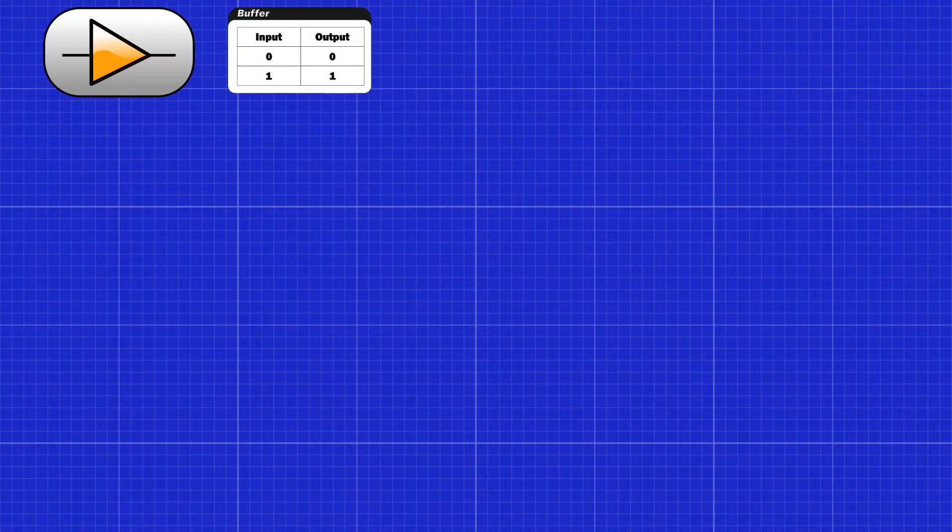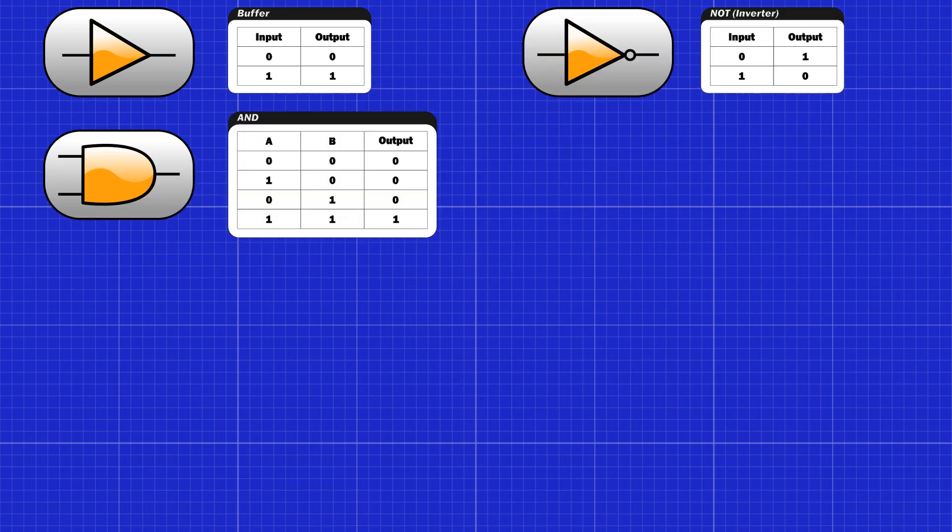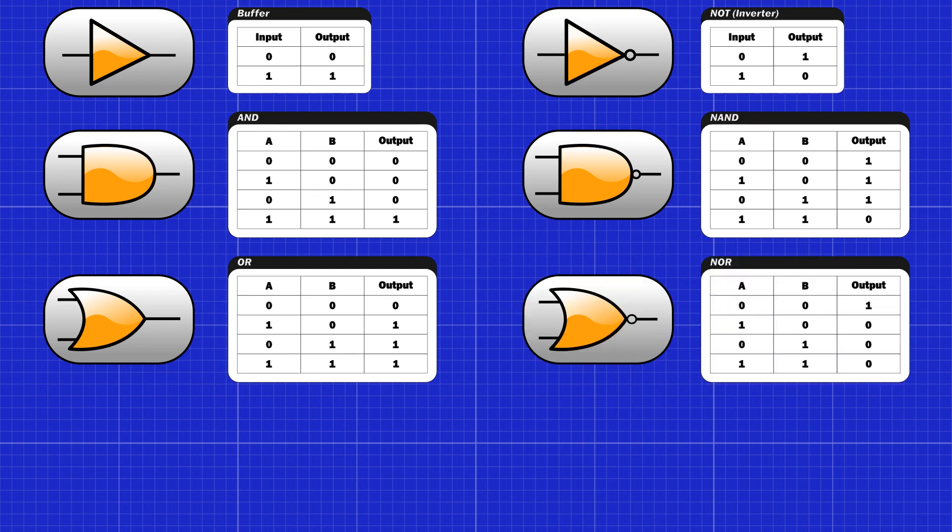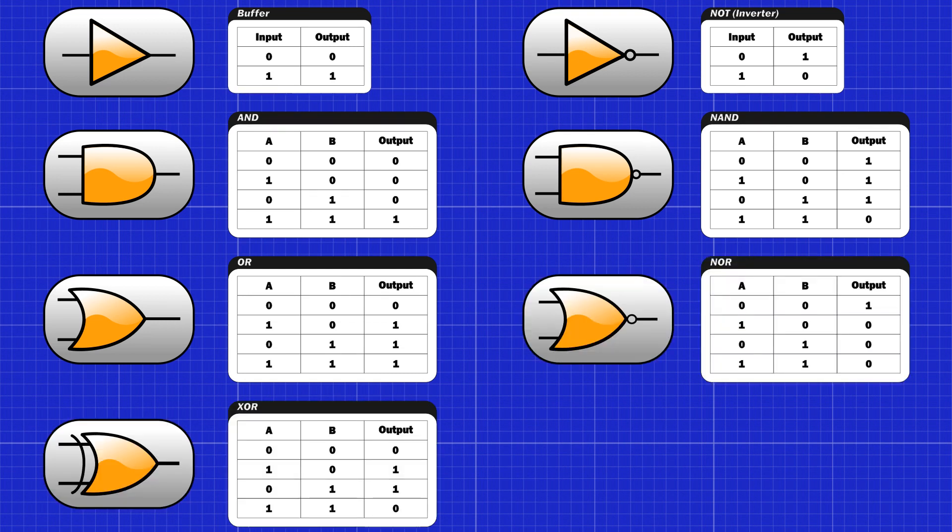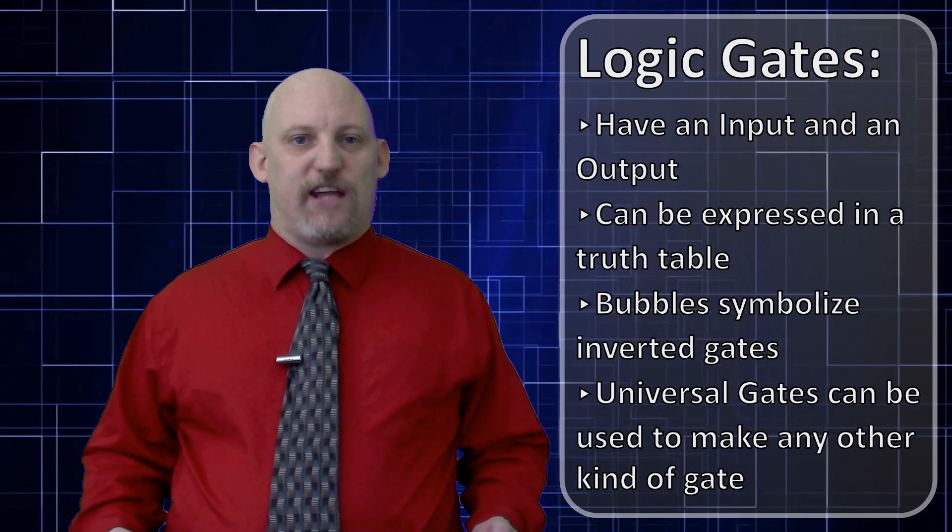Now we have the tools to make a computer, any kind of computer. I'm going to lay out the gates that we went over along with their truth tables. We have the buffer, the inverter or the NOT gate, the AND, the NAND, the OR, the NOR, the XOR, and the XNOR.